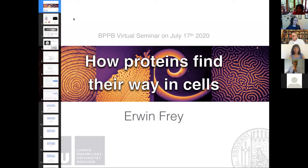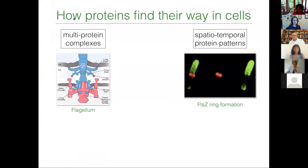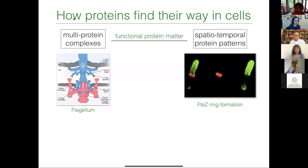How proteins find their way in cells — that's the question I'm asking today, and there are many systems where you can ask these questions. You can ask how do proteins find their way in multiprotein complexes like the ring structures that you have in flagella? You can also ask that question for pattern formation with proteins like the formation of the FtsZ ring, responsible for mid-plane location and cell division in E. coli.